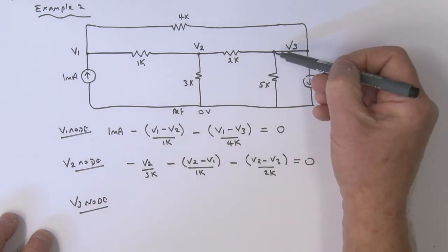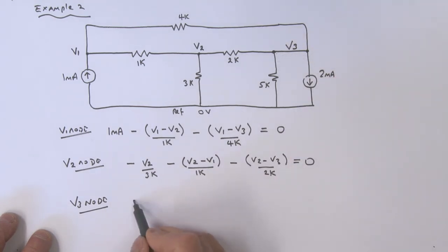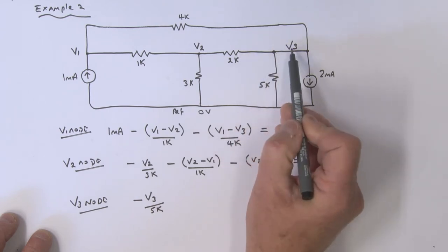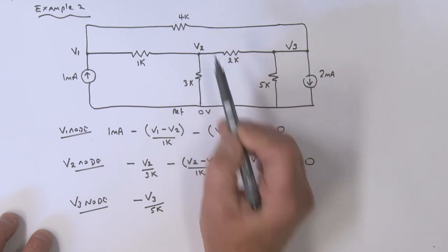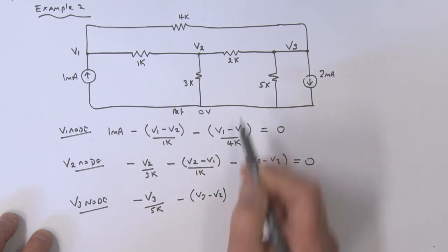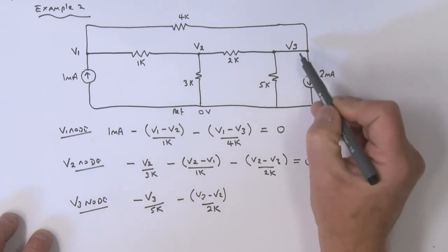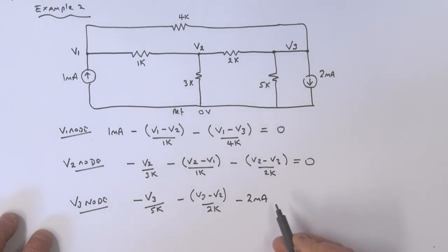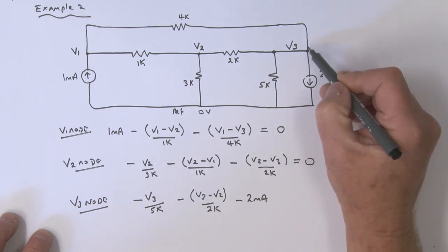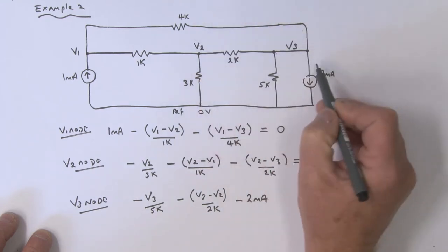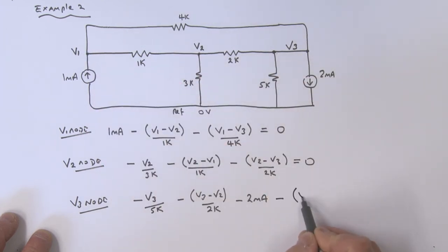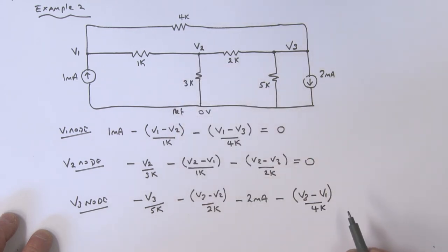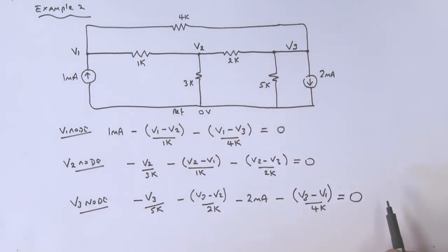Now for the V3 node. We've got minus V3 divided by 5k, then minus (V3 minus V2) divided by 2k, minus 2 milliamps going in this direction, and minus (V3 minus V1) divided by 4k. All of that equals zero — that's our third node equation.